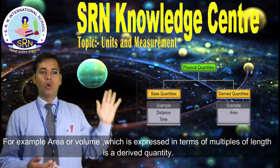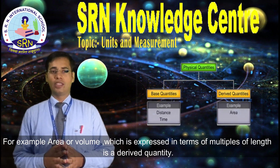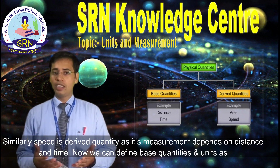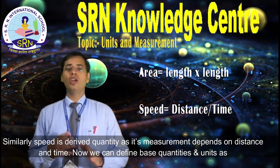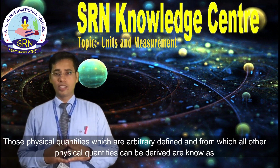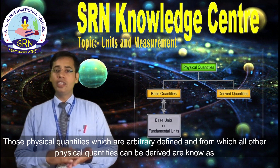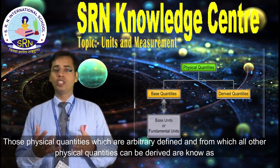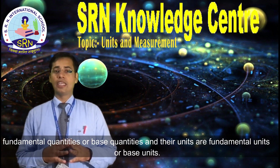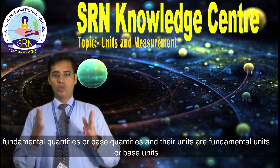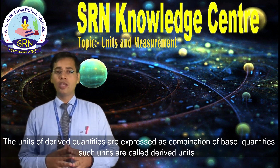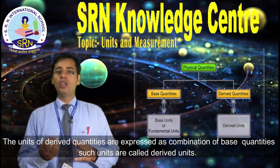For example, area or volume, which is expressed in terms of multiples of length, is a derived quantity. Similarly, speed is a derived quantity as its measurement depends on distance and time. We can define base quantities and units as those physical quantities which are arbitrarily defined and from which all other physical quantities can be derived, known as fundamental or base quantities. The units of derived quantities are expressed as combinations of base units, and such units are called derived units.